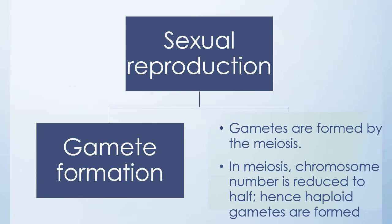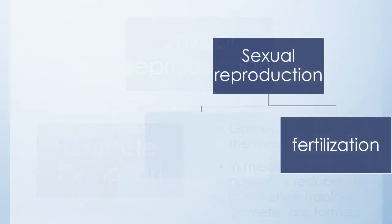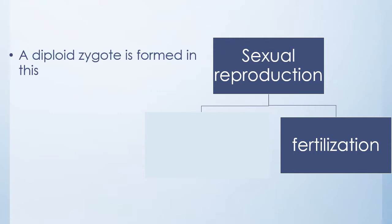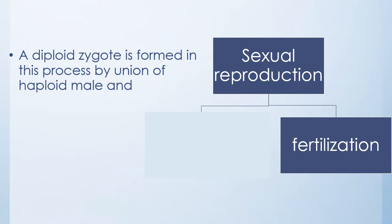So haploid gametes are formed. The next process is fertilization. A diploid zygote is formed in this process by the union of haploid male and female gametes.